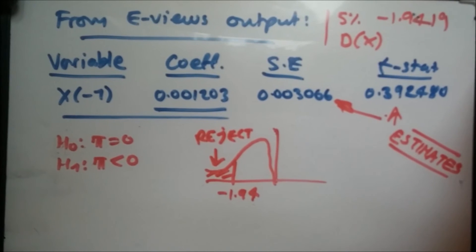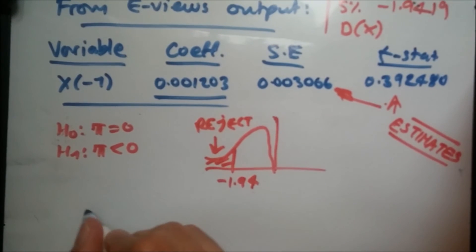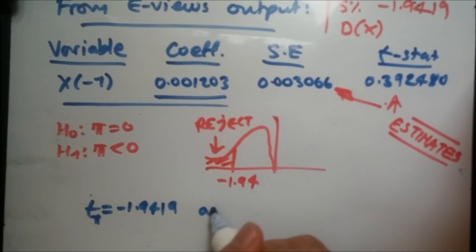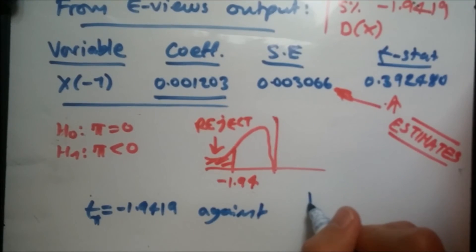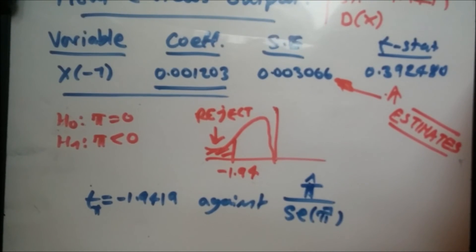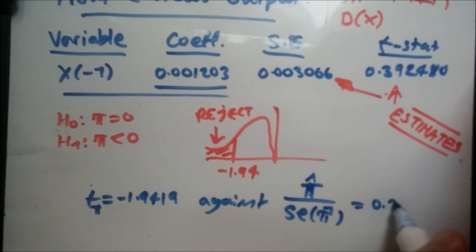So what do we have so far? The test statistic at the 5% level is this. We can instantly say that t, the test statistic of pi, is minus 1.49419 against, and normally we would have to do this value - the coefficient we're going to call pi over the standard error. This variable over this variable, this over this, which actually equals this, so we don't even need to work it out.